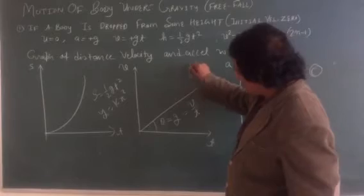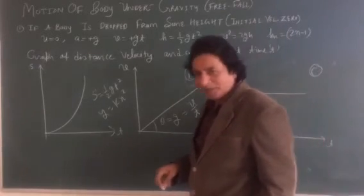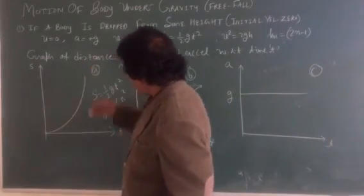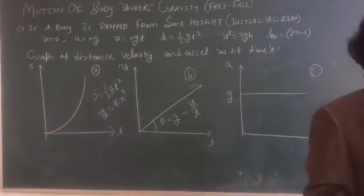Is it clear? The graph B for the velocity-time, and the graph A for the distance-time. Any question? Thank you.